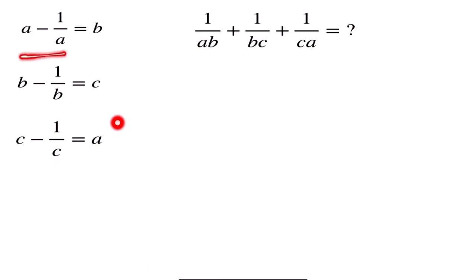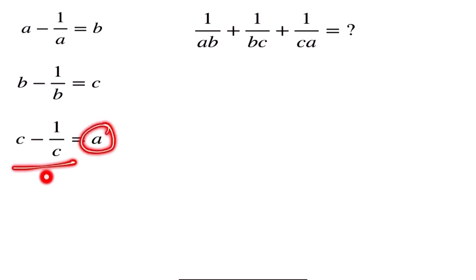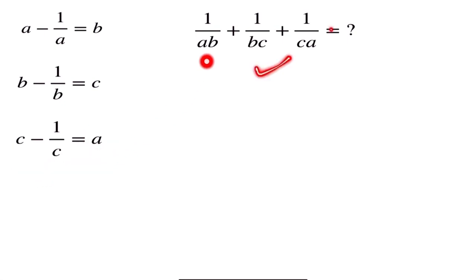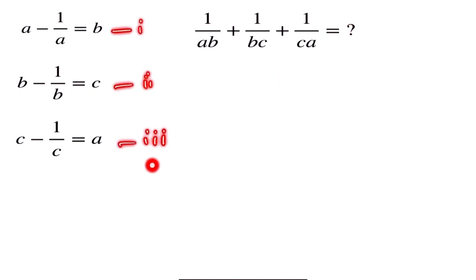So this is our question: A minus 1 by A is equal to B — equation 1. B minus 1 by B is equal to C — equation 2. C minus 1 by C is equal to A — equation 3. We have to find the value of 1 by AB plus 1 by BC plus 1 by CA.